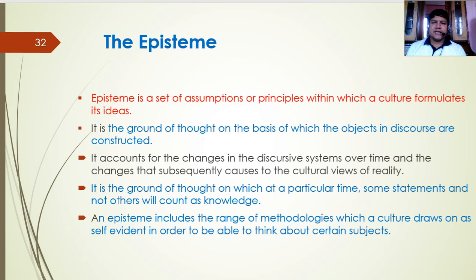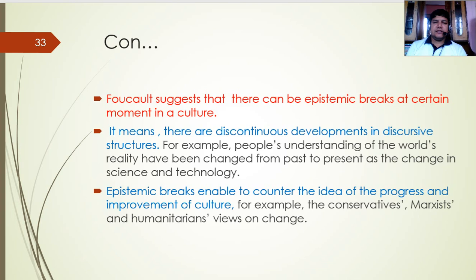Foucault says that there can be an epistemic break at a certain moment in a culture, meaning there are discontinuous developments in discursive structures. Epistemic break may influence discursive structure and enables us to counter ideas of progress and improvement of culture. For example, conservative Marxist ideas, neo-Marxist ideas, and post-modern Marxist ideas are different now — this is because of an epistemic break in Marxist ideology and discourse.